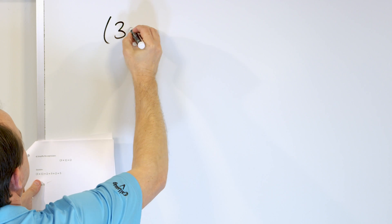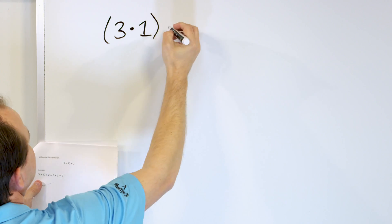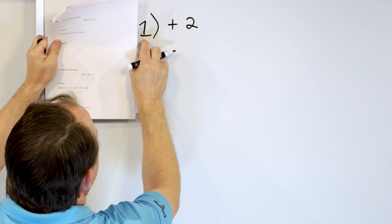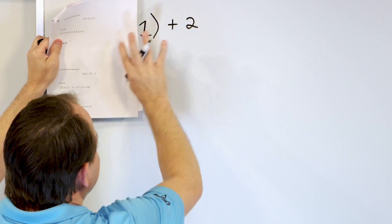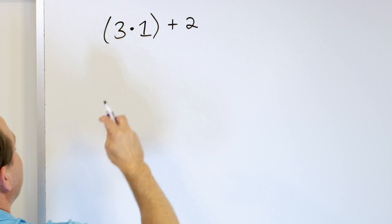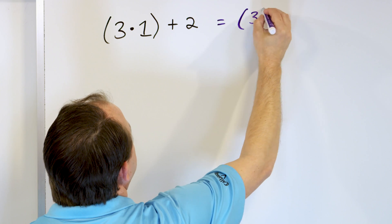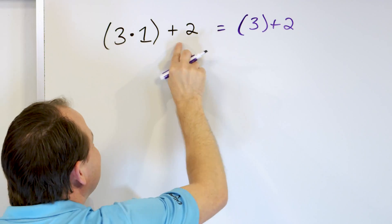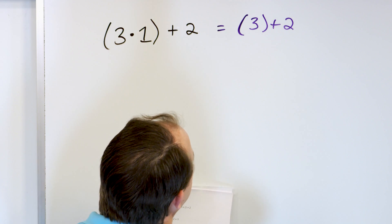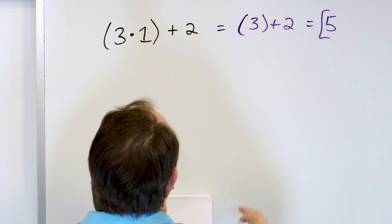Next example. Say we have parentheses three times one — the dot means multiply — and then we add two on the outside. We do not do one plus two first; we have to do what is inside the parentheses first. Three times one is three. Then we still have to add the two that comes last. Three plus two is five — the answer is five.